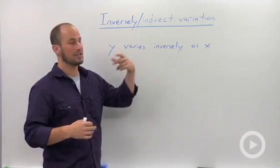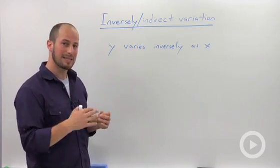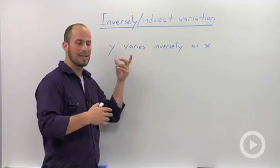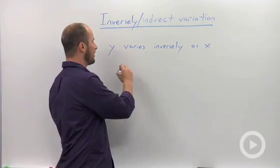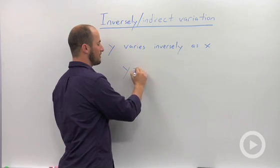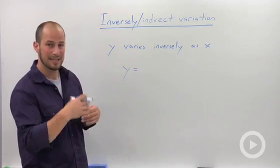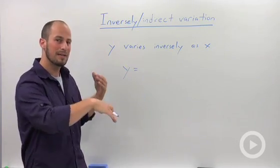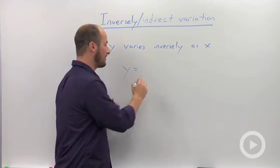So y varies inversely as x. What this actually means is whenever something varies it's always going to be by itself. So this is y equals, and inversely basically means instead of being on the same level they're on opposite levels. So we're going to divide for this.